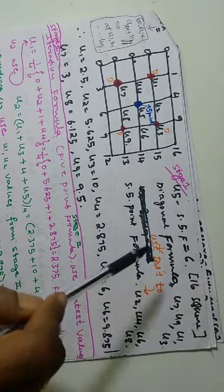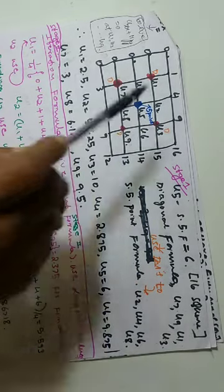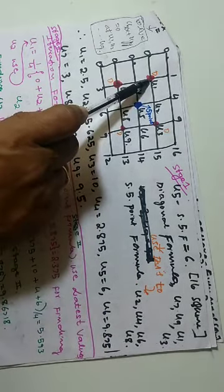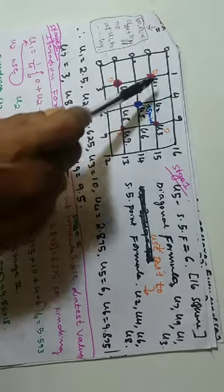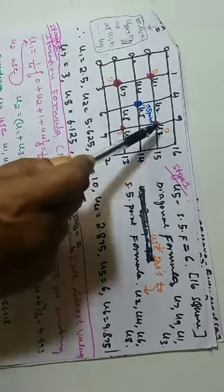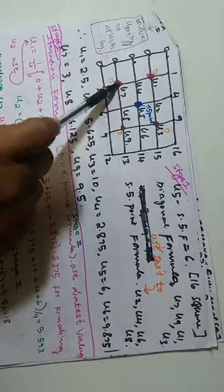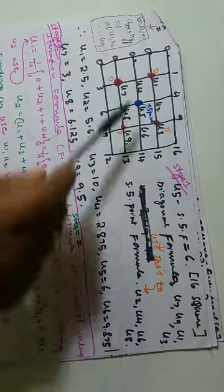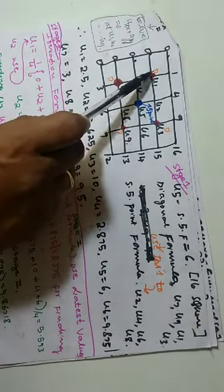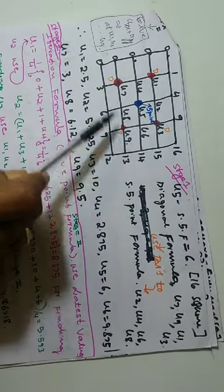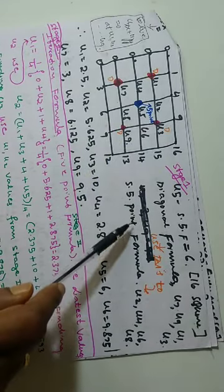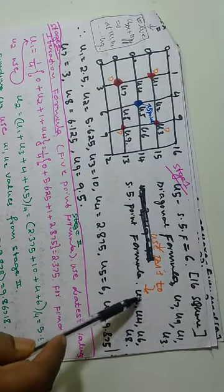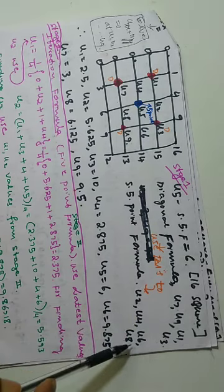So, to repeat: u5 is calculated by the standard 5-point formula. The corner points u1, u3, u9, u7 — the center points for each block — are calculated using the diagonal formula, represented as 'd'. Next, using the standard 5-point formula, you calculate u2, u4, u6, u8.